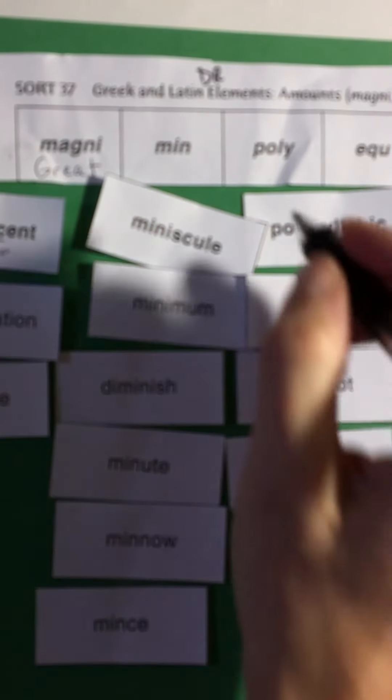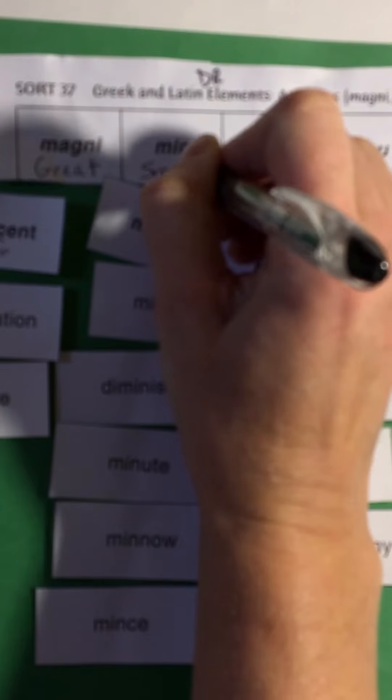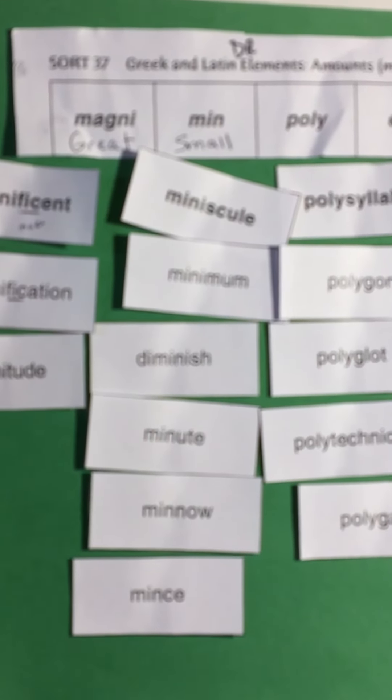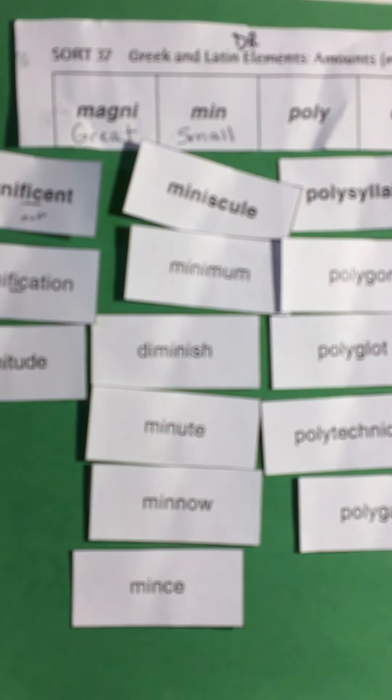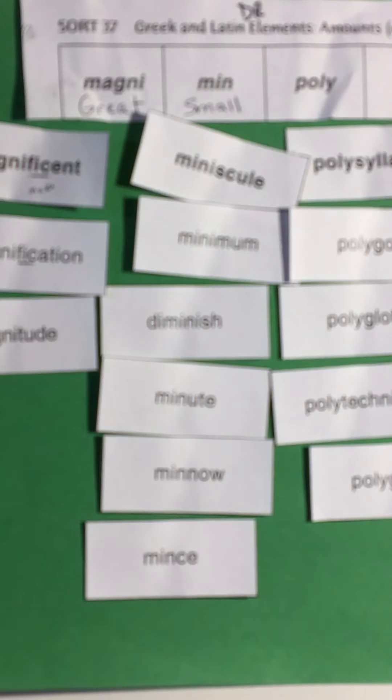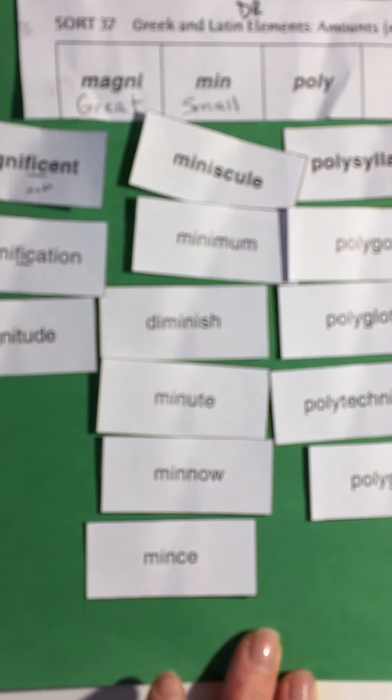So what do you suppose min means? It means small, but you got that clue from some of these. Minuscule, that reminds me of small things. The minimum. Diminish means to get smaller or quieter. A minute isn't very long, and minute, like say you wanted to put a minute amount of sugar, that would be just a very small amount. A minnow, very small fish. And to mince is when you cut something up into teeny tiny pieces.